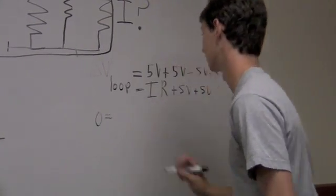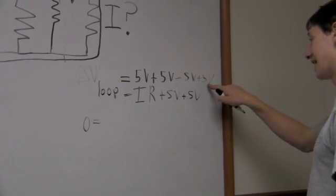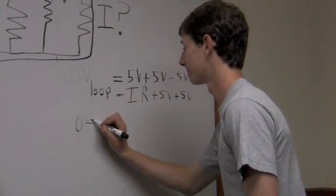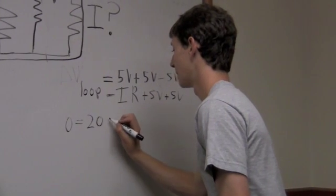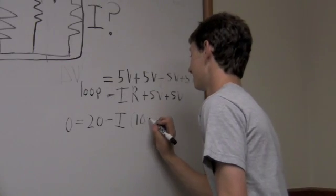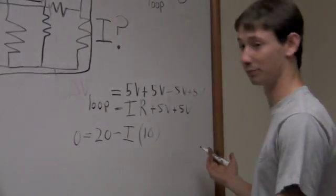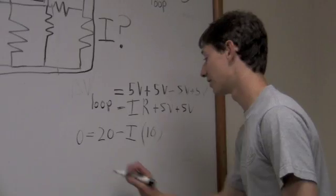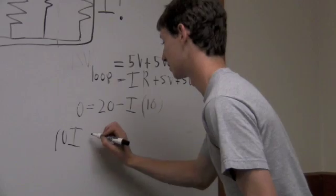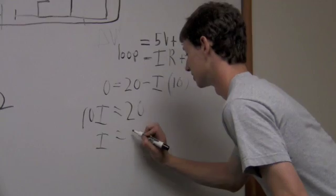So, 0 equals, and we can simplify this as 5, 10, minus 5, so that's 5, 10, 15, 20. So, you have 0 equals 20 minus I times 10, because 10 is the resistance of this resistor. So, as we can see, it's pretty simple to solve from here, that IR, or 10I equals 20, and I equals 2 amps.